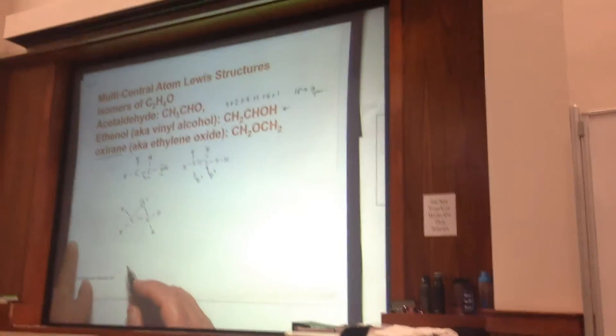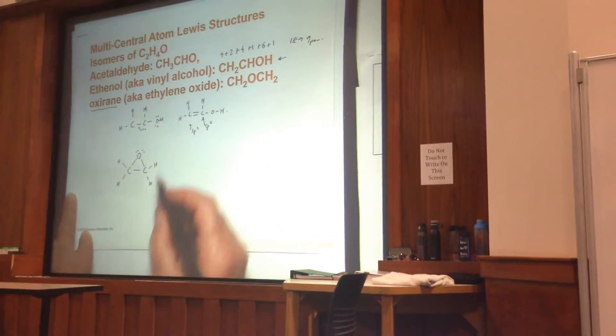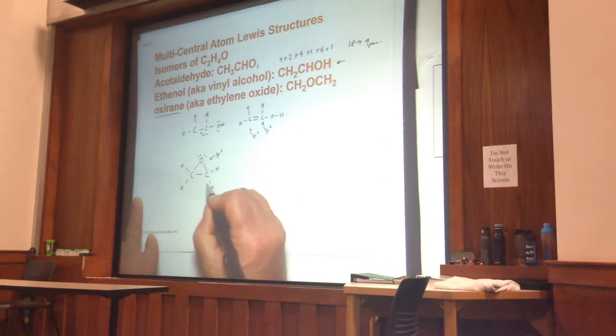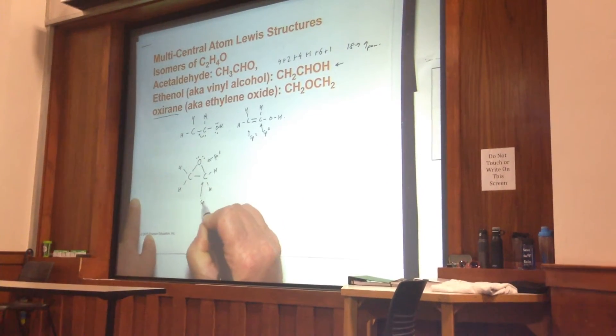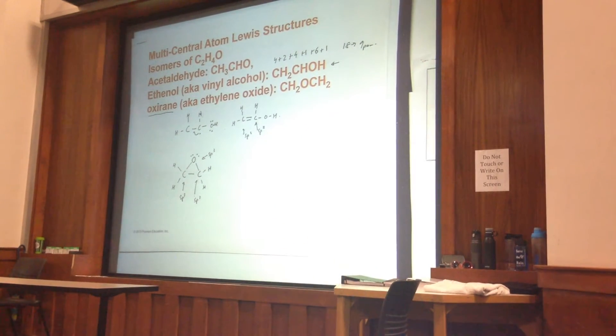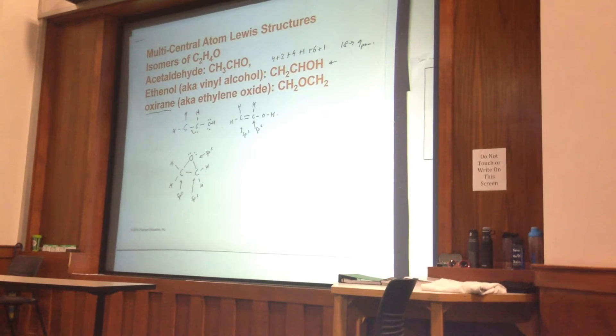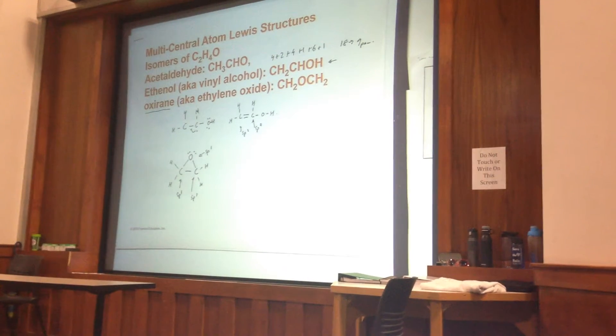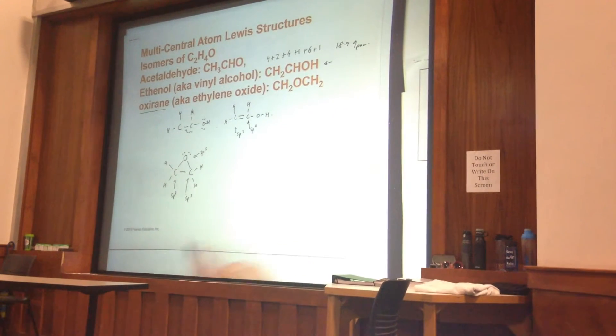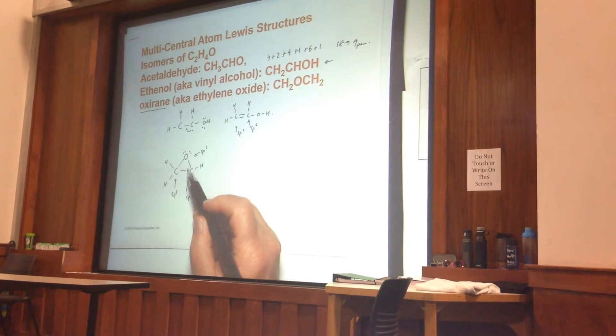We have 4 pairs of electrons around it. So in this case, for oxygen we have sp3 hybridization. This carbon we have sp3 hybridization. This carbon we have sp3 hybridization. Now clearly they're not going to be perfect 109.5 degrees in terms of bond angles. This is actually quite a strained molecule.